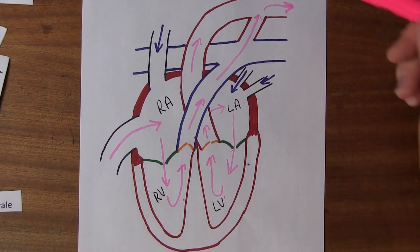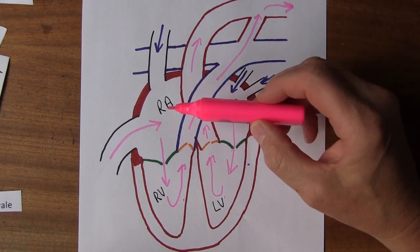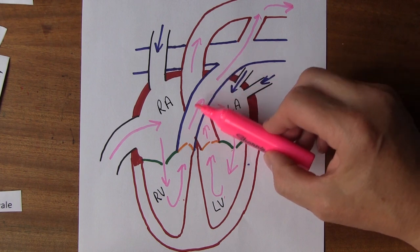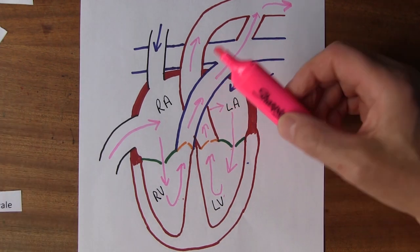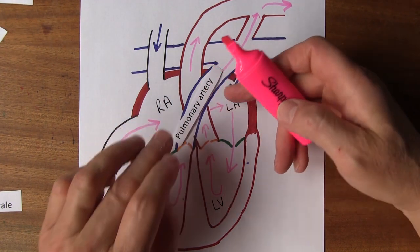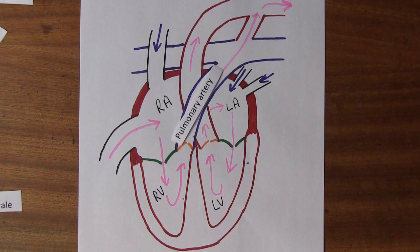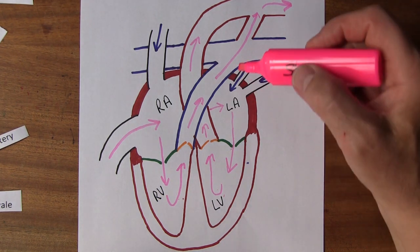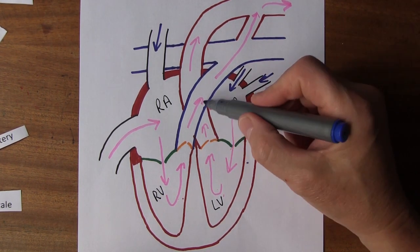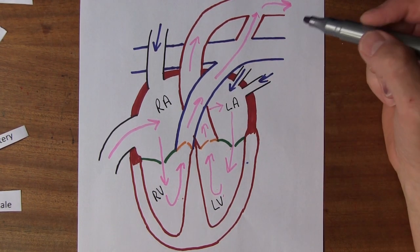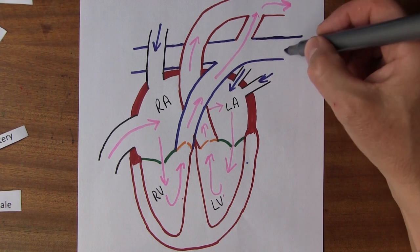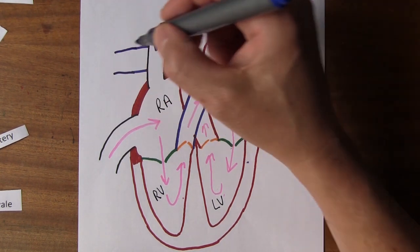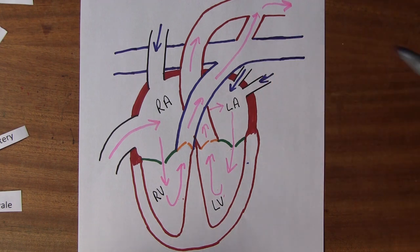Some blood goes from the right atrium to the right ventricle and is pumped into the pulmonary artery - the main trunk of the pulmonary artery. We don't want a lot of blood going to the fetal lungs because they're not oxygenated. The pulmonary artery quickly bifurcates into one branch going to the left lung and one to the right lung.